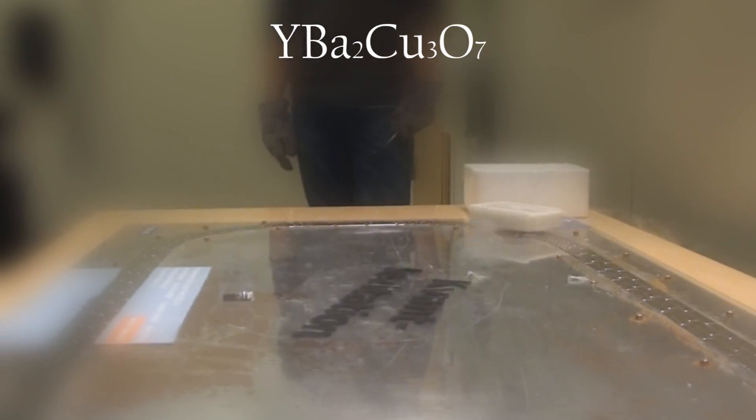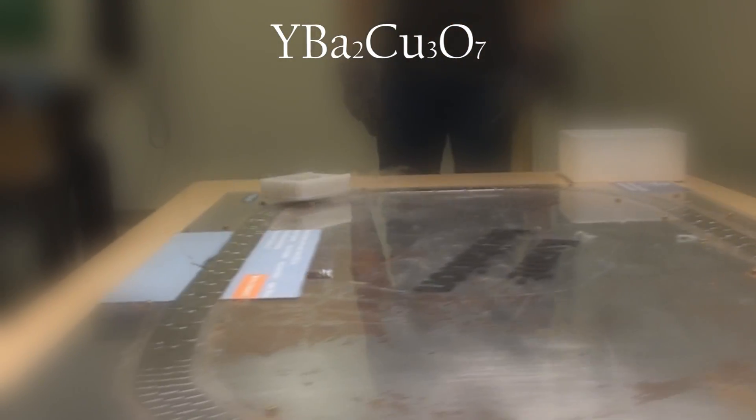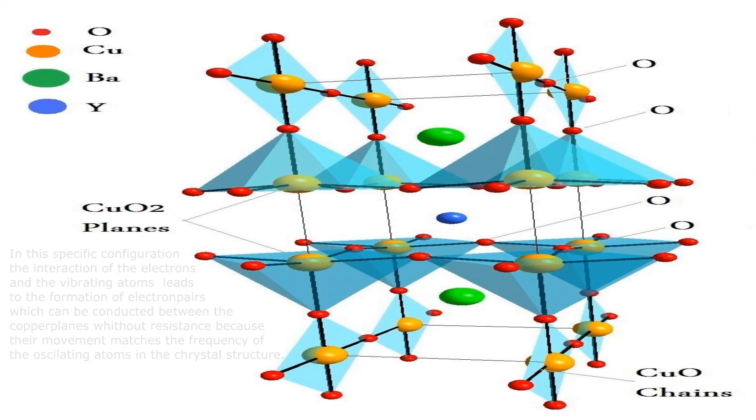Inside the levitating box there is a piece of material made from yttrium, barium, copper and oxygen that has bonded and formed a crystalline chemical compound. The way that the atoms in these crystals are organized gives these materials some very interesting properties.